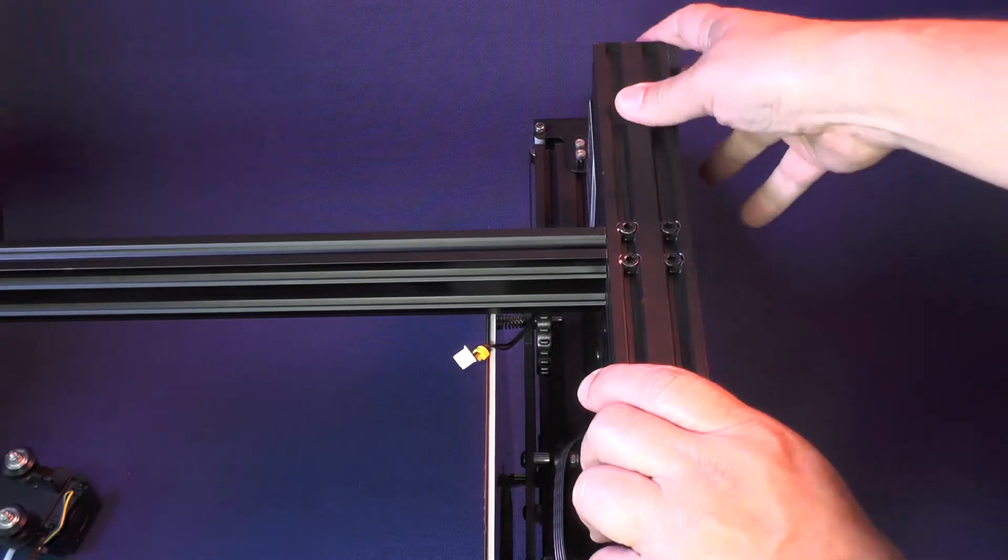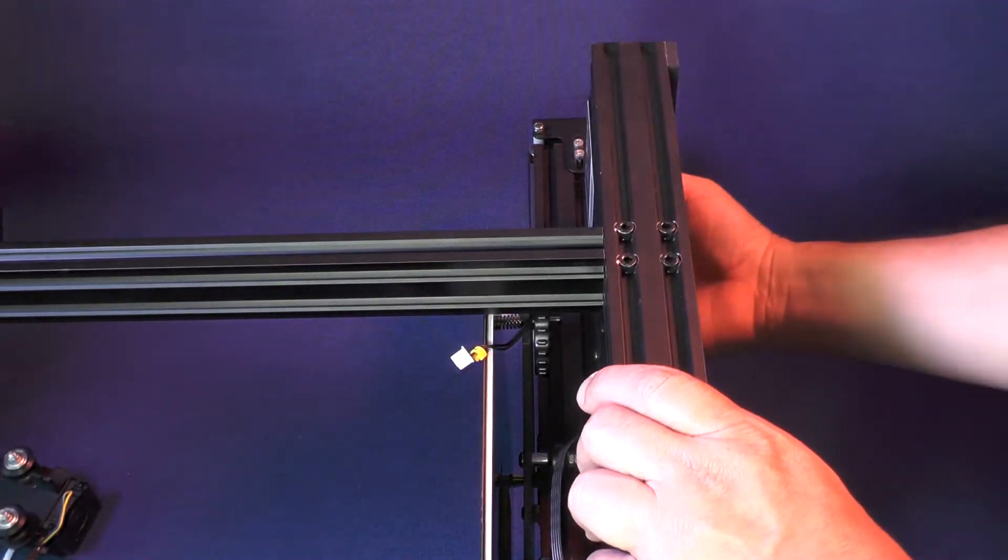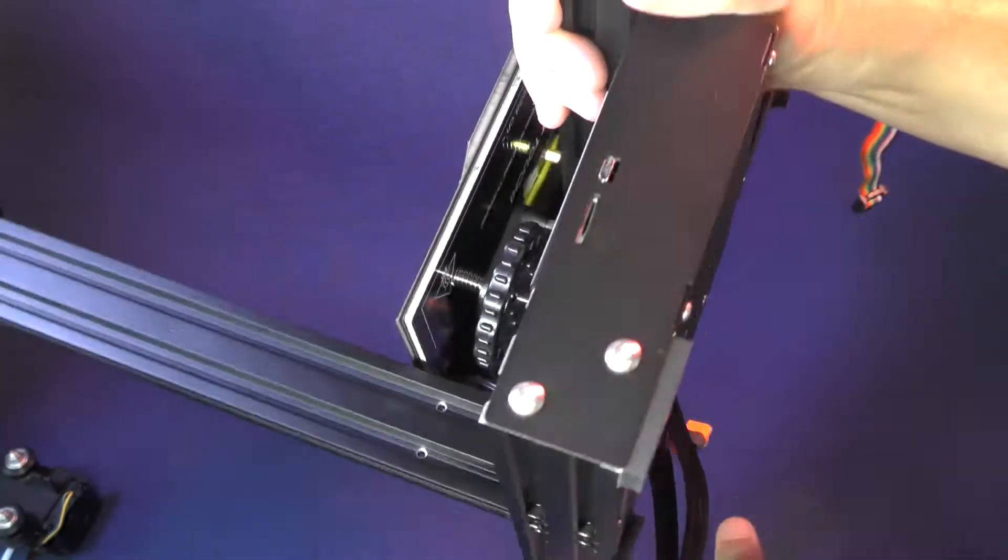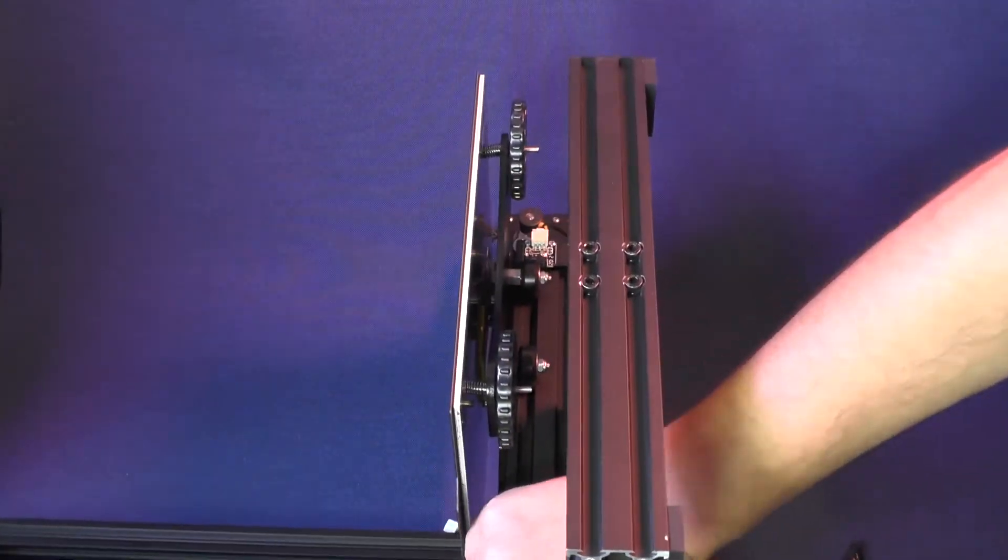Now let's turn the printer base around and do the other side. And now that I turn the base of the printer around, the printer is facing me.